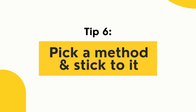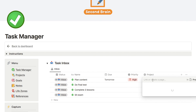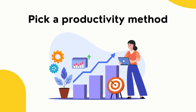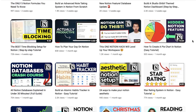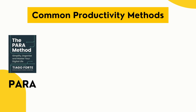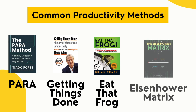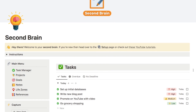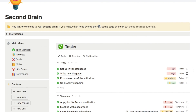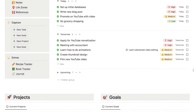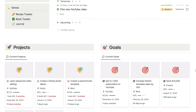Tip number six is picking a productivity method and sticking to it. A lot of people build their own productivity systems within Notion and it can be really difficult building one from scratch, so the best way is to pick a productivity method and stick with it. Some of the most popular methods are the PARA method, Getting Things Done, Eat the Frog, and the Eisenhower Matrix. My second brain template actually combines the PARA method and Getting Things Done into one powerful system.